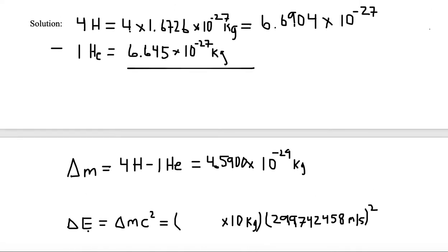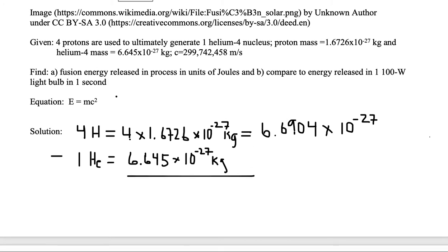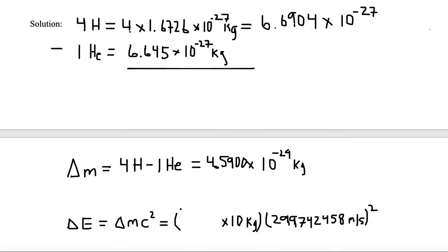So we need to multiply this out. We're going to find the change in energy is equal to the change in mass times C squared using Einstein's famous formula. So we're going to have, put our number down in here, 4.5900 times 10 to the minus 29th times it by 299,742,458.